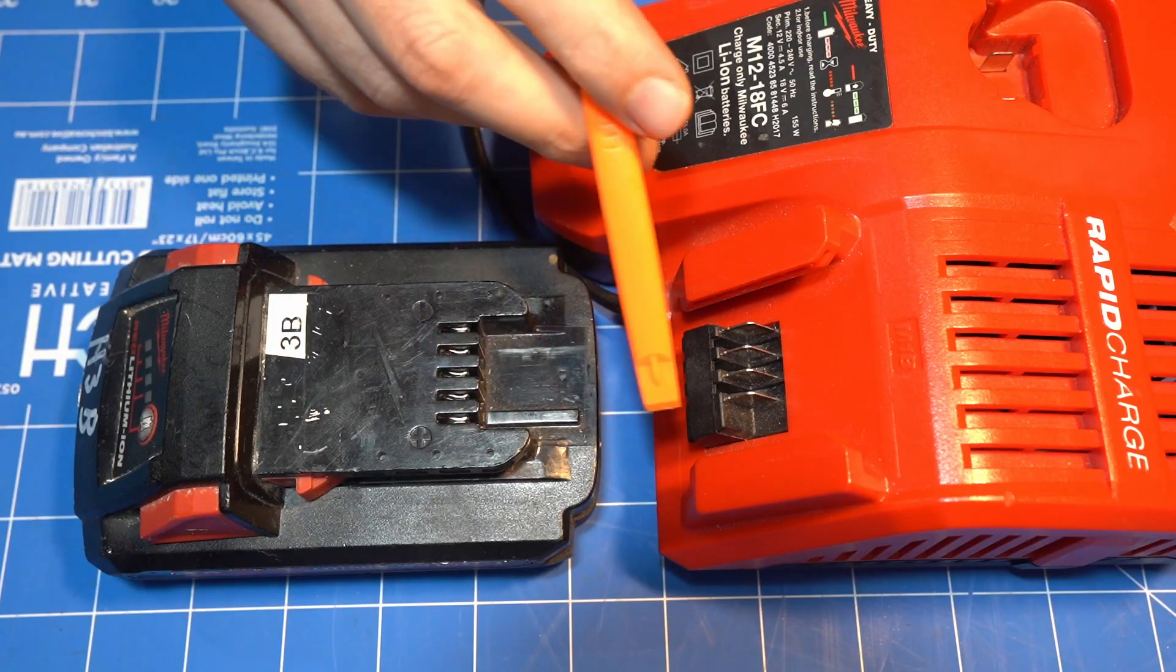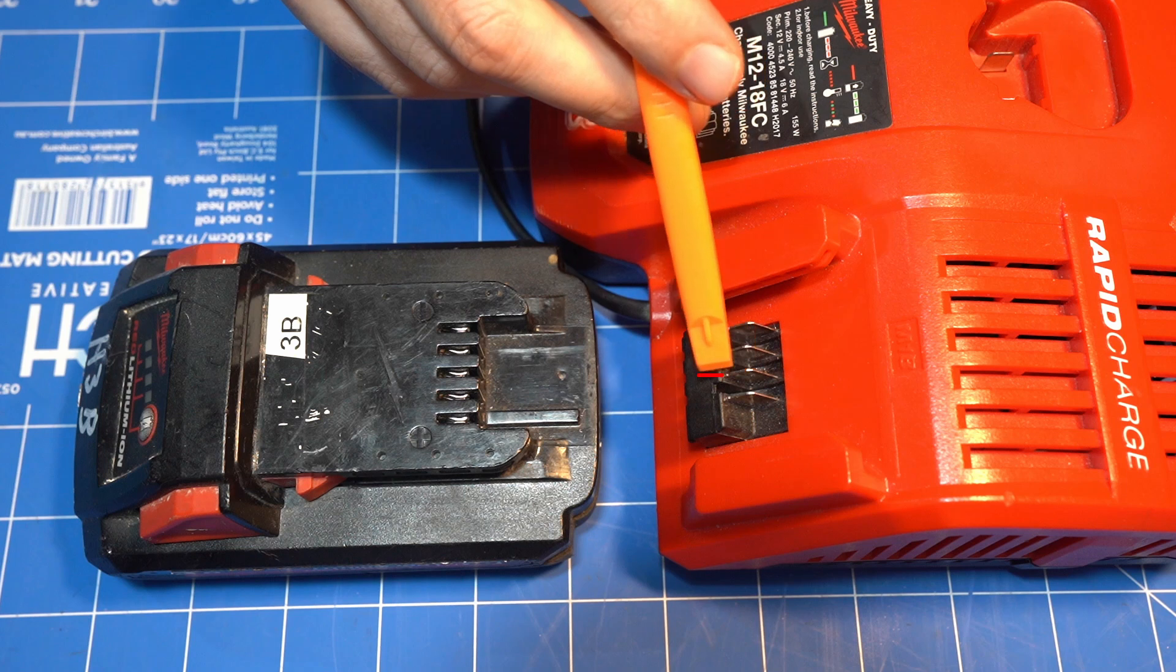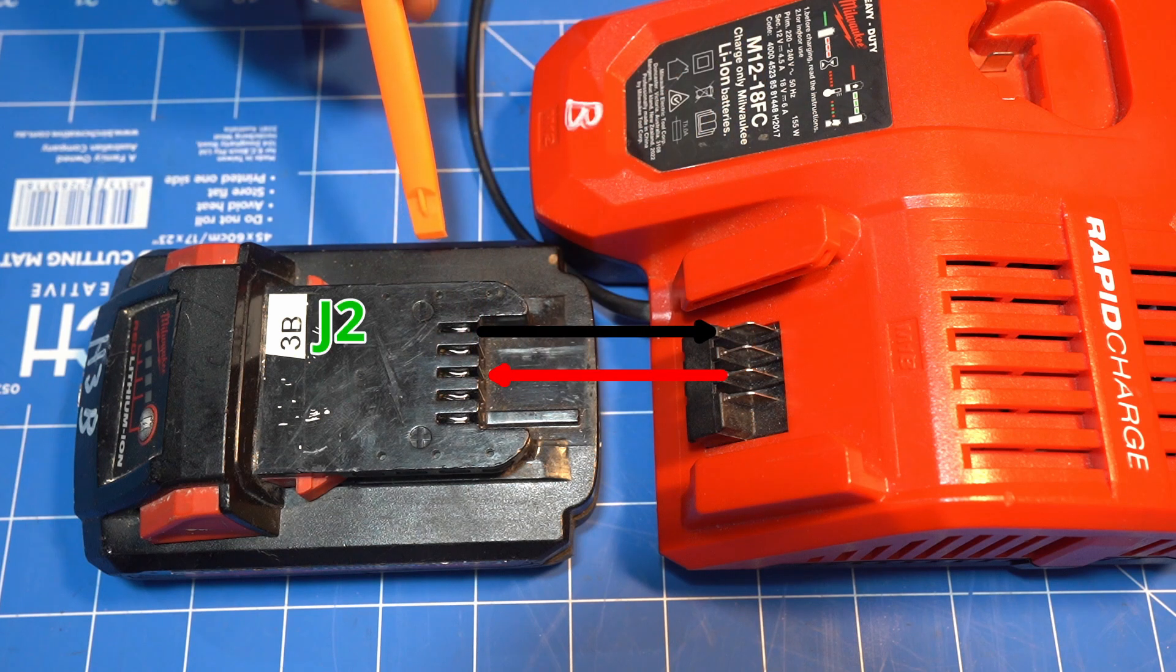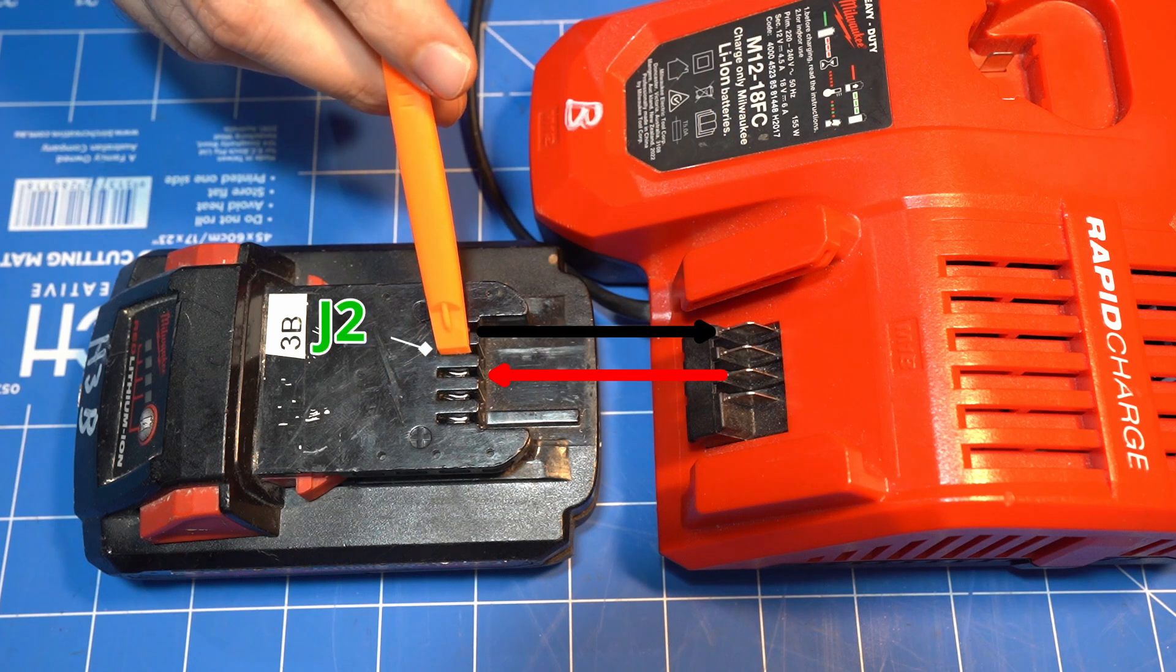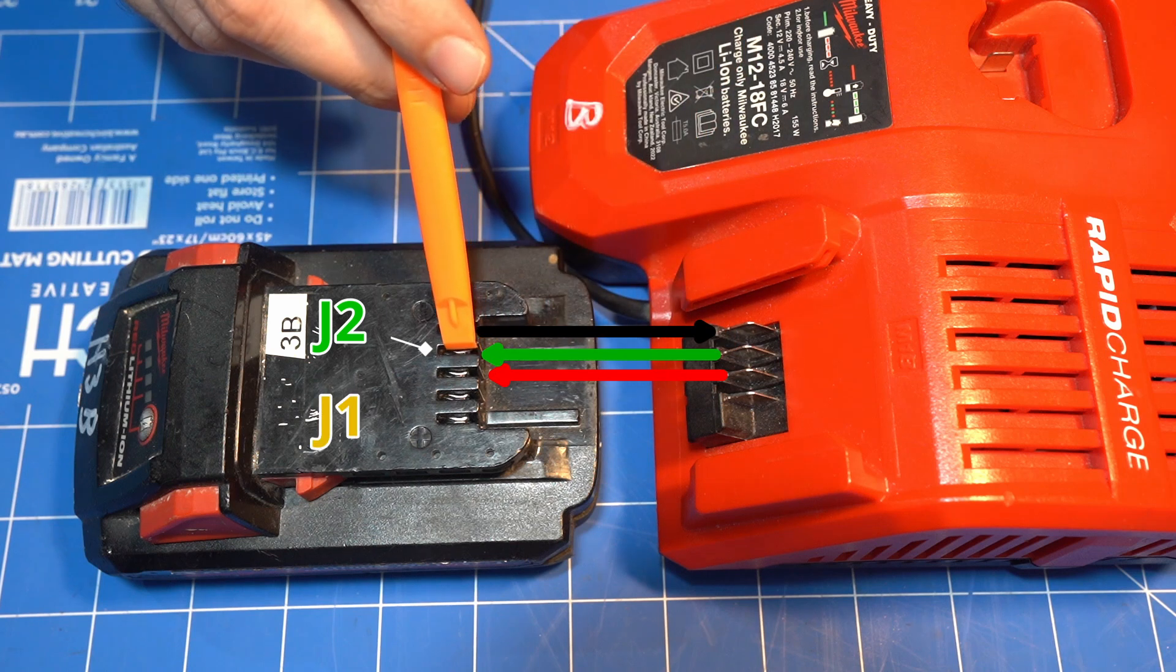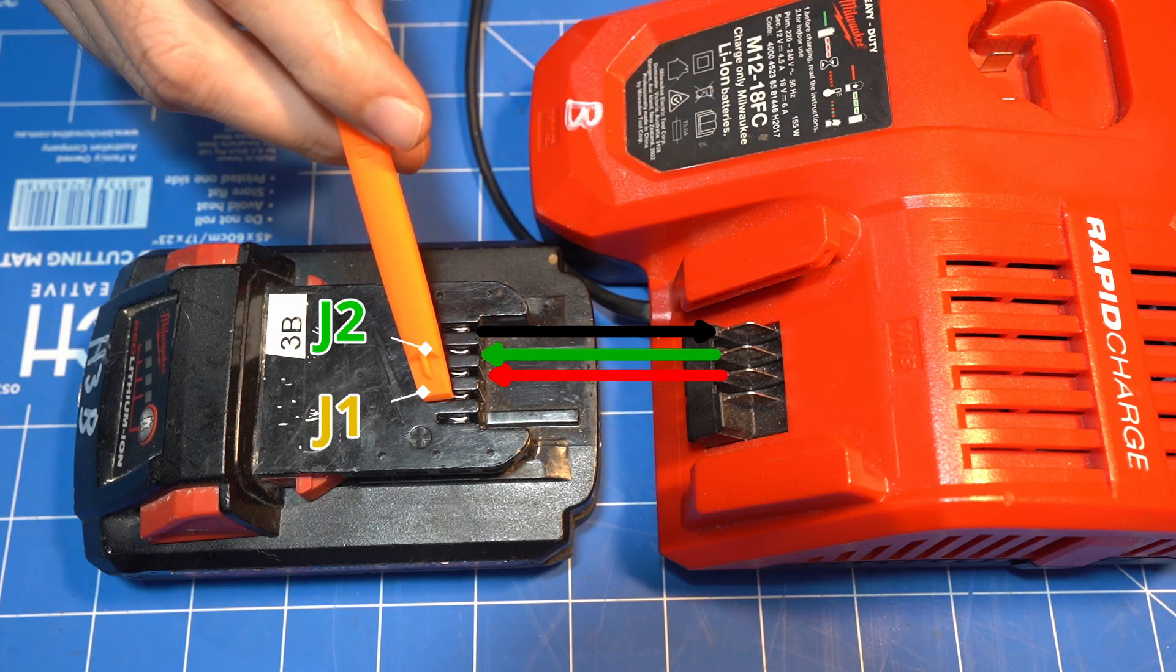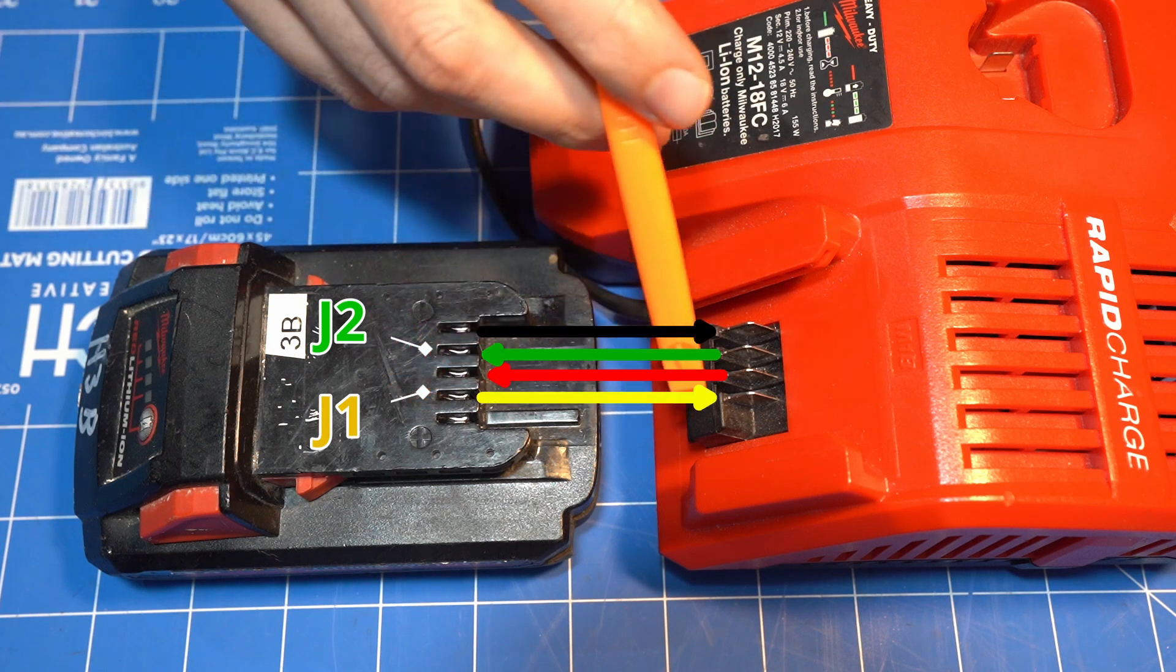The charger doesn't use the positive power pin and instead sends power in through the middle charging pin. J2 is closest to the ground pin and is used by the charger to send messages to the battery. J1 is closest to the positive pin and is used by the battery to send messages to the charger.